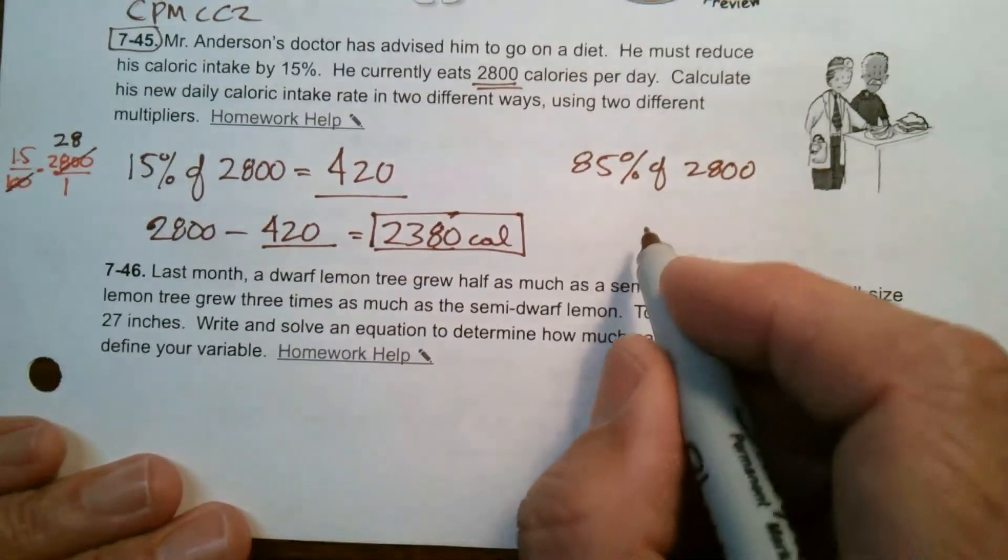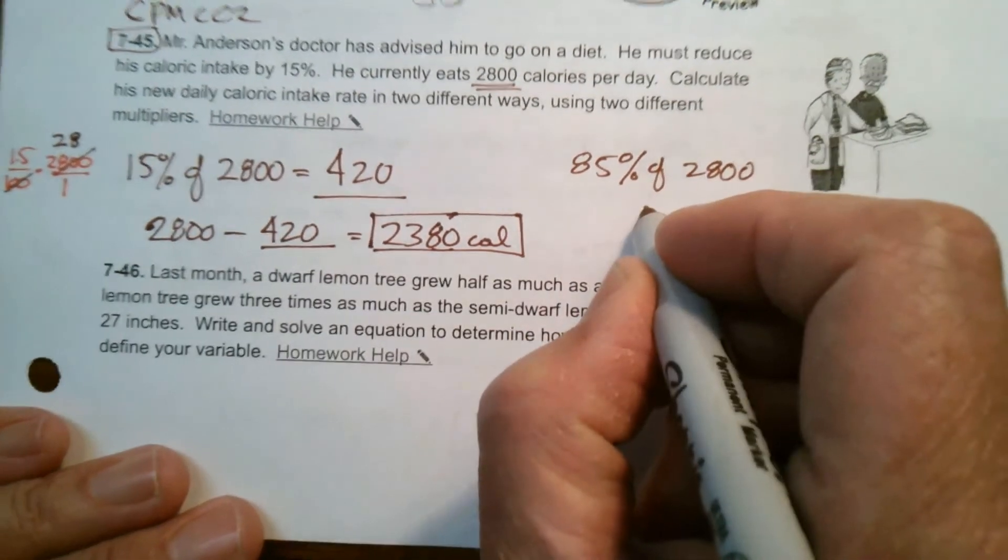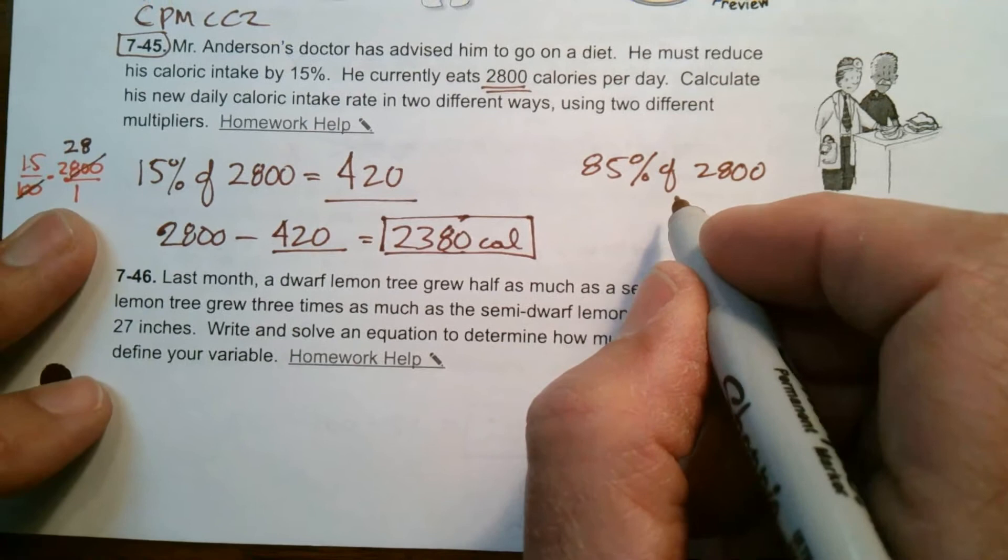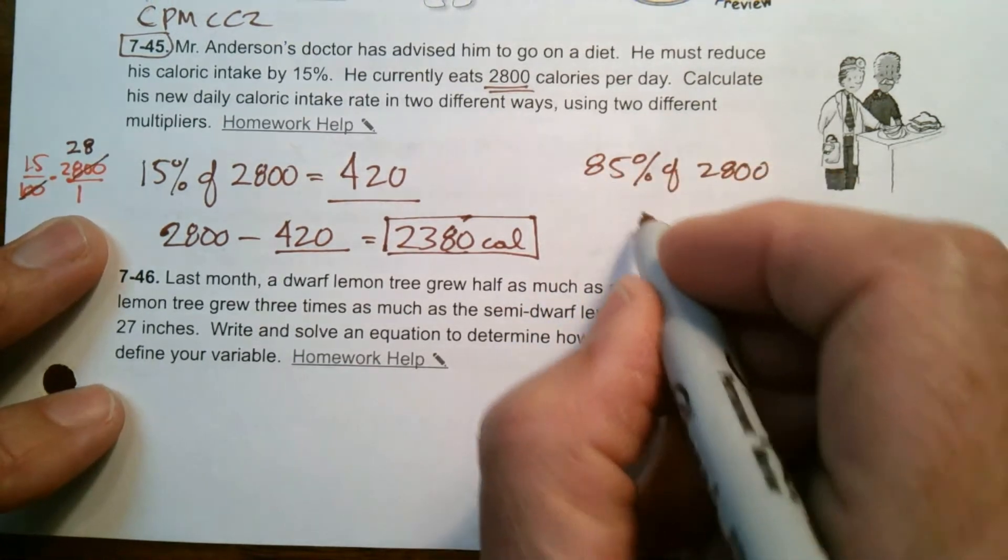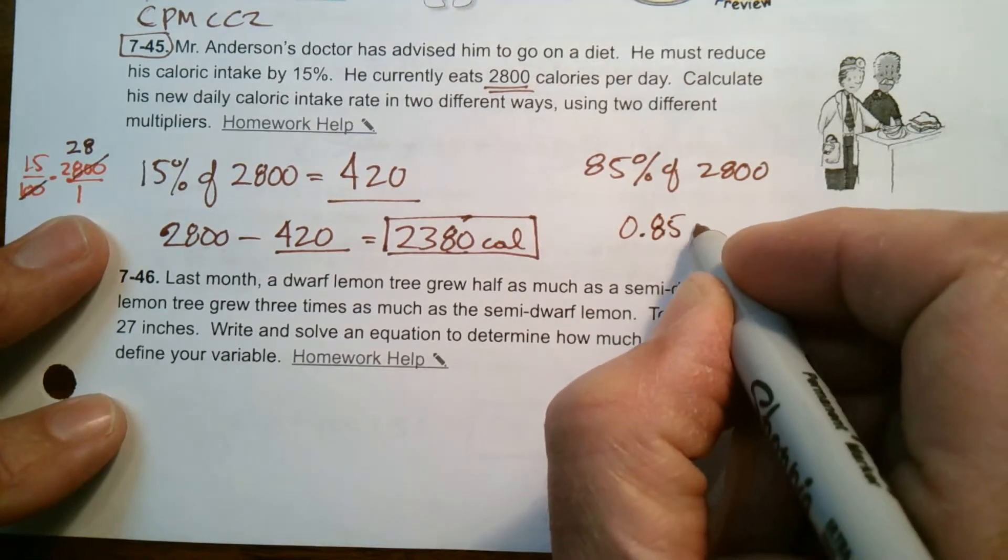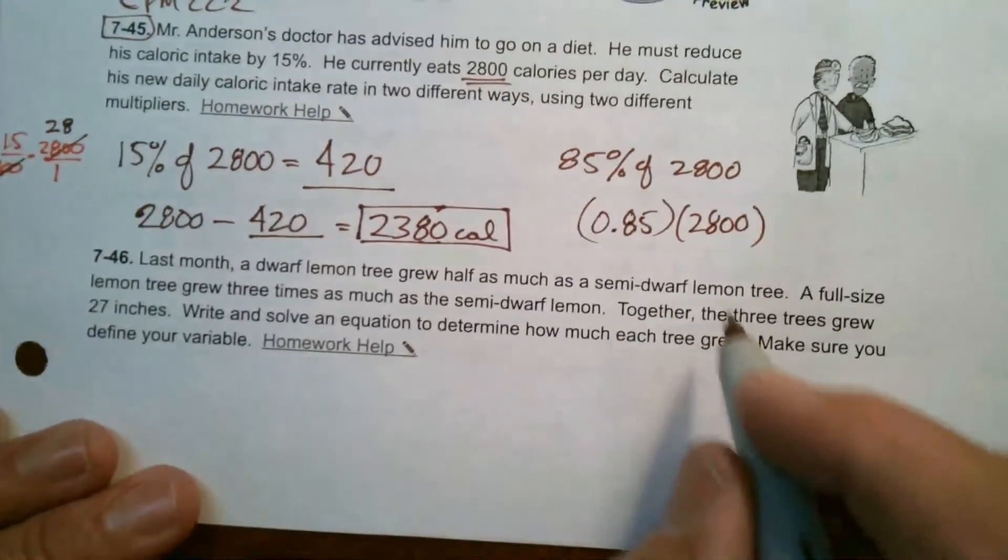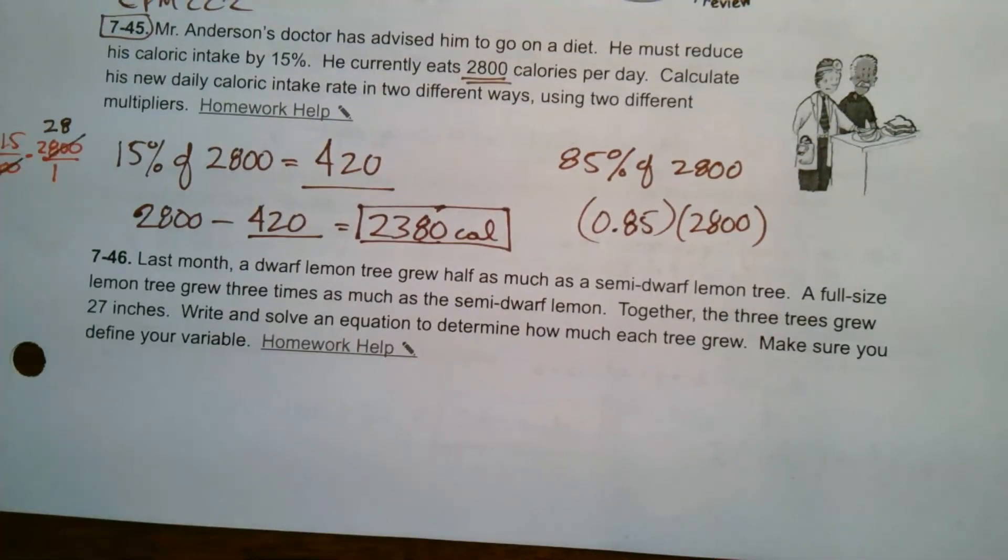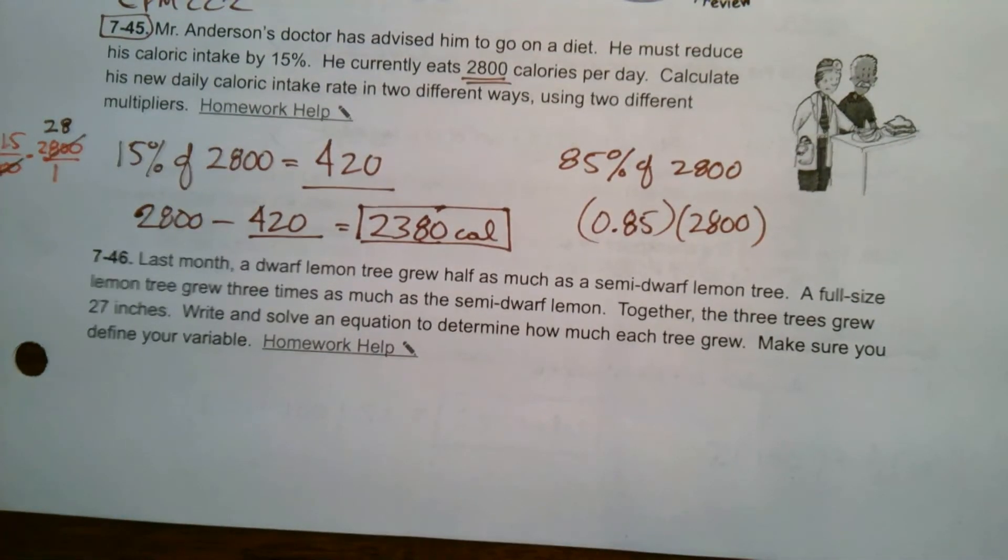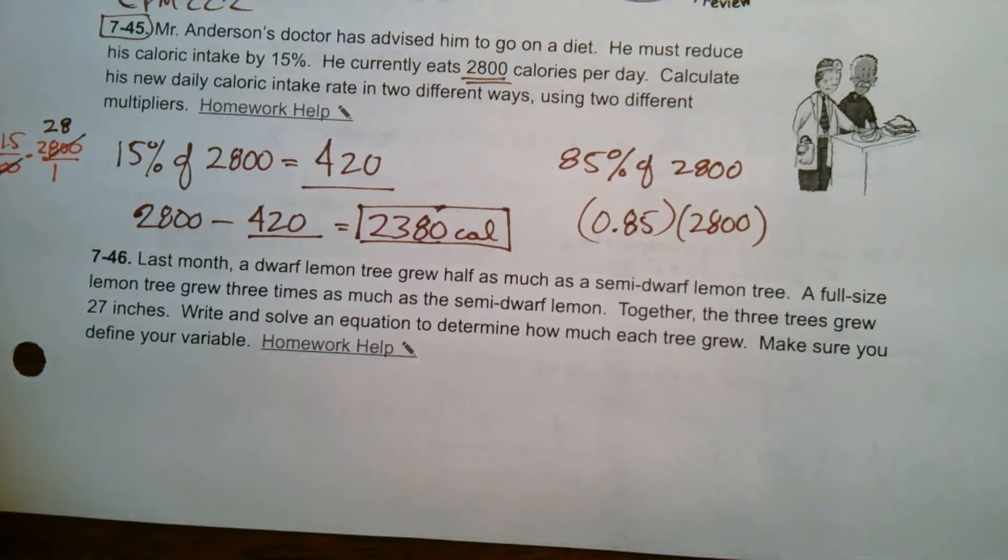Or over here, I can do 85%. So 85% of that, and I'll do this one as a decimal. I did this one as a fraction. I'll do this one as a decimal. So my multiplier here is going to be 0.85 and I'm going to multiply that times 2,800. So when you multiply decimals, remember you're multiplying the numbers and then making sure your final answer has enough of the decimal digits as you do that multiplication.